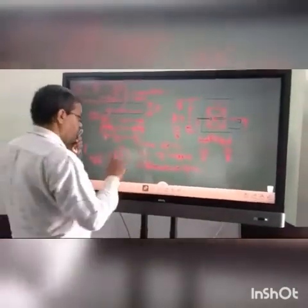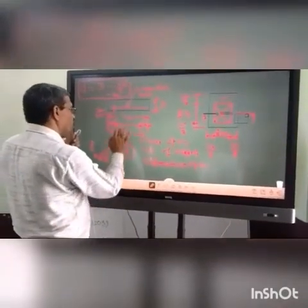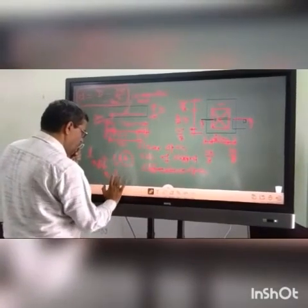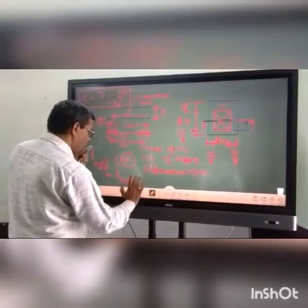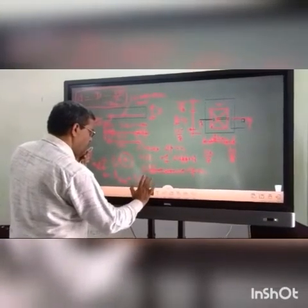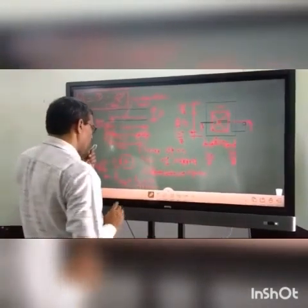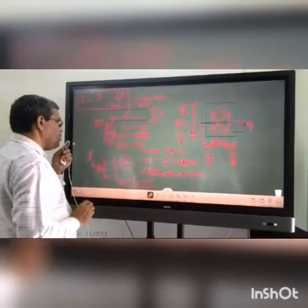With this, we can find out effective span by taking the L clear and effective depth, that is one option. Another option is the L center to center, that is L clear plus width of the wall. Between these two, whichever is the smaller value, that will be taken as the effective span of the slab.